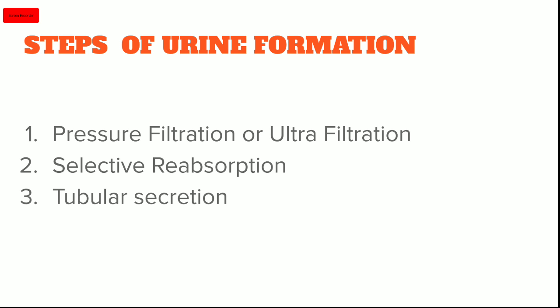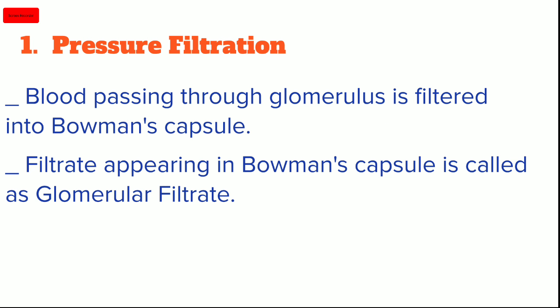Today we will discuss urine formation, which is a function of the kidney. Broadly, when urine formation occurs in the kidney, there are three steps: number one is pressure filtration, also known as ultrafiltration; number two is selective reabsorption; and number three is tubular secretion. We will discuss each step and see diagrammatically which parts of the nephron are involved in each step.